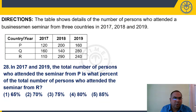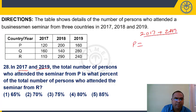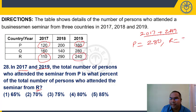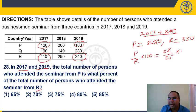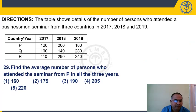Question 28: In 2017 and 2019, persons from P = 120+160 = 280. Persons from R in those two years = 110+240 = 350. P as percentage of R = (280/350) × 100 = (4/5) × 100 = 80%. Answer: 80%.